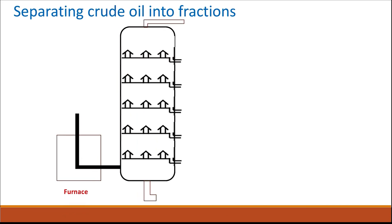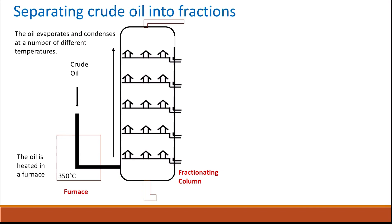In the fractional distillation unit, there is a furnace and a fractionating column. The crude oil is fed into the furnace and heated to around 350°C. The different fractions vaporize and then condense at different temperatures. As you go up the fractionating column, the temperature decreases — from 340°C at the bottom to 40°C at the top. At each temperature, fractions with a similar number of carbon atoms condense and are collected, because they have similar boiling points.